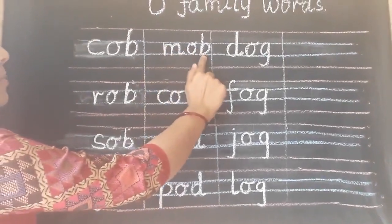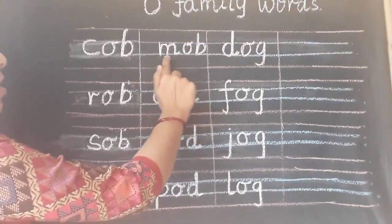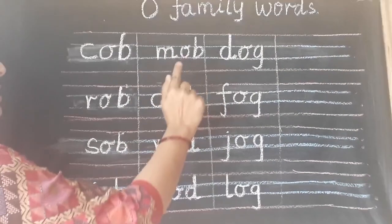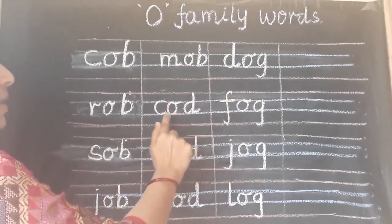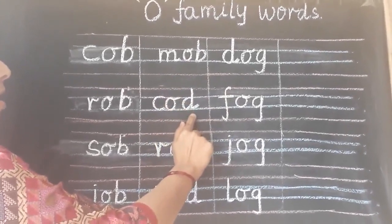M-OB, MOB. M-OB, MOB. Now we will see OD words. K-OB, COB. K-OB, COB.